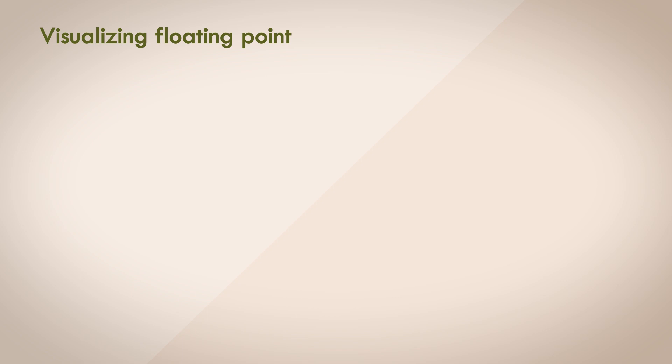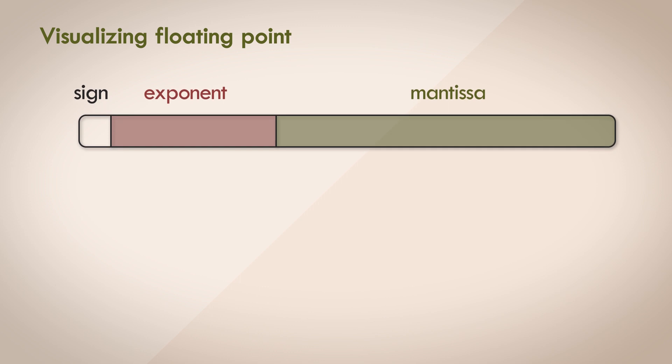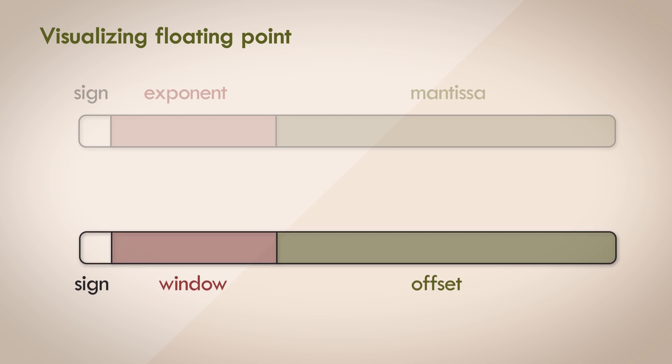Instead of looking at the floating point format in terms of exponent and mantissa, we can instead look at it more functionally as to what the exponent and mantissa actually represent. We can call them window and offset.